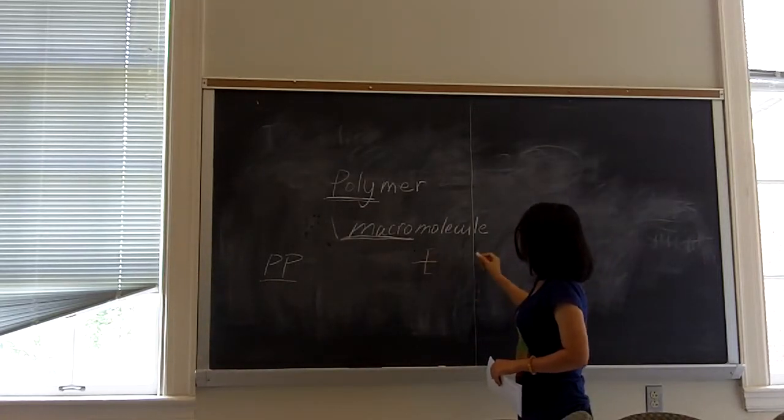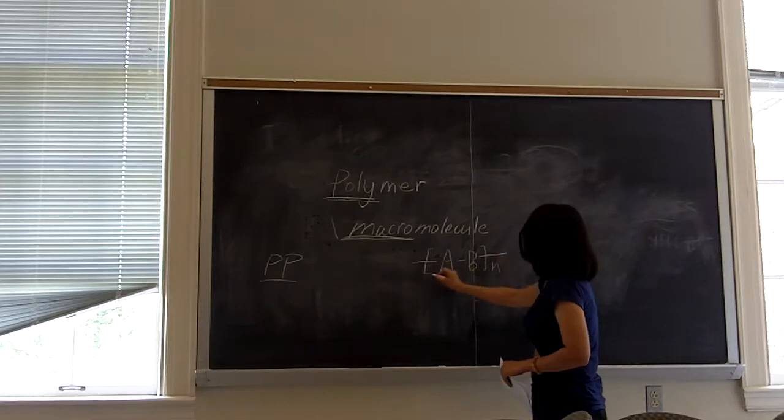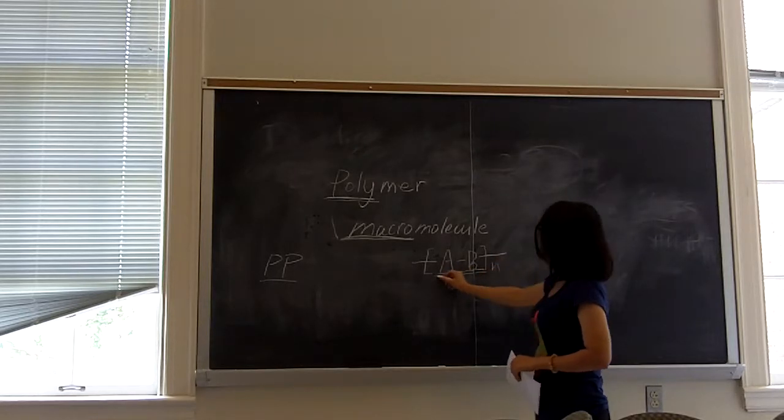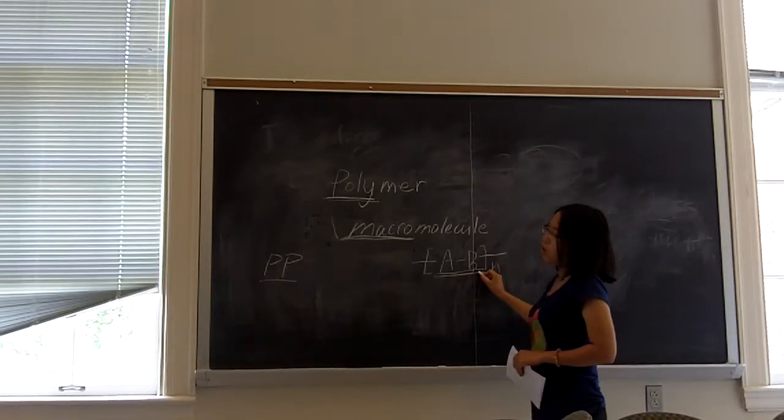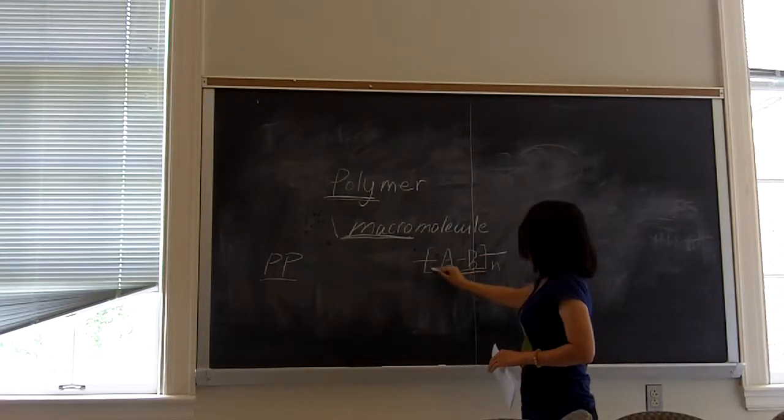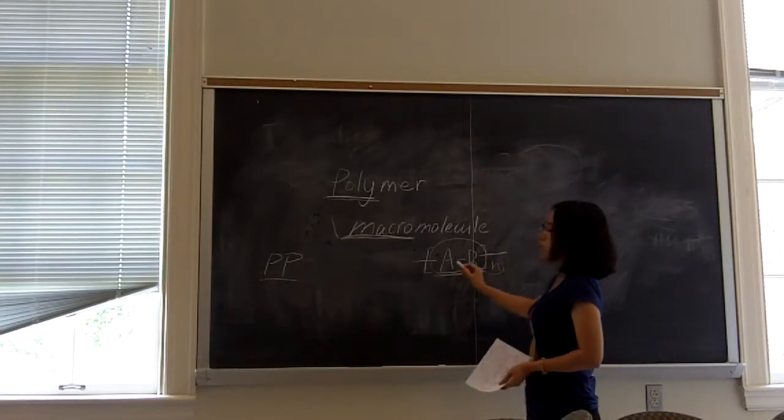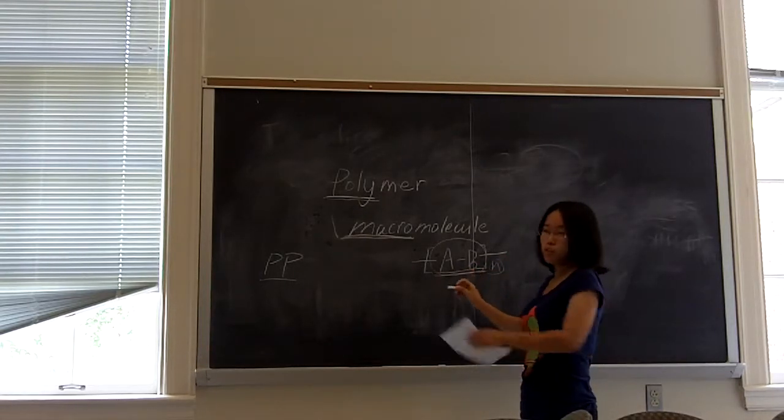The formula for polymer is like (AB)n. This AB part is a basic unit in polymer. Polymer is filled up with many small units. So this is a very basic one. And N stands for the amount of AB units in this polymer.